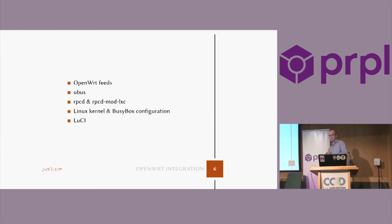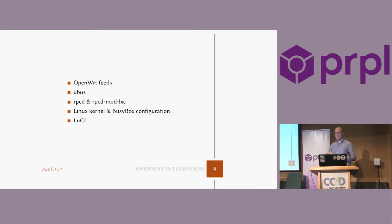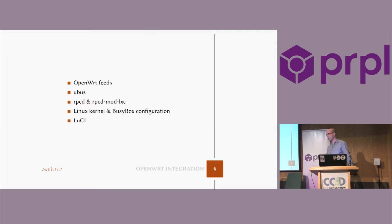I'm going to fill in a couple of details that Steven mentioned at the beginning about OpenWrt UBus. I will talk about RPCD and the module for RPCD called LXC, some additional Linux kernel stuff that is needed for LXC to work properly, BusyBox as well, and we also made a LuCI interface. I would like to say that all of this is now in mainline, so if you want to check it out and play with it, you can.